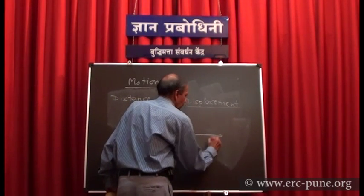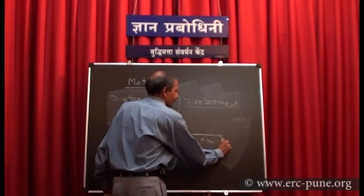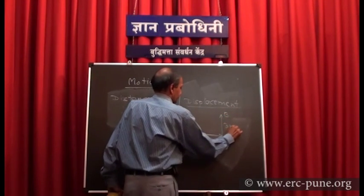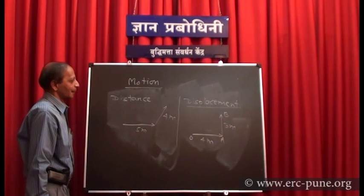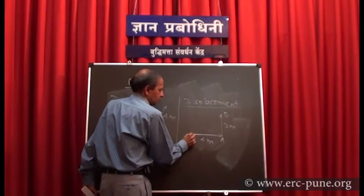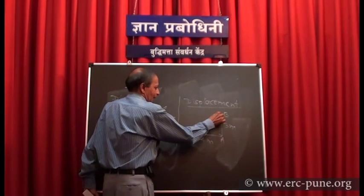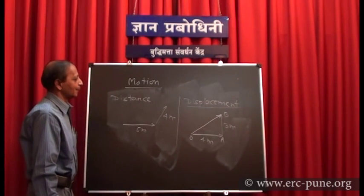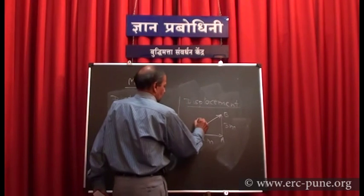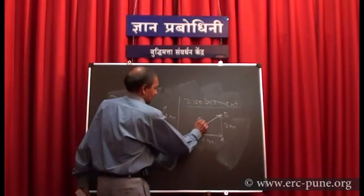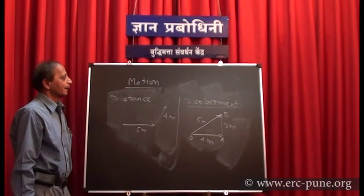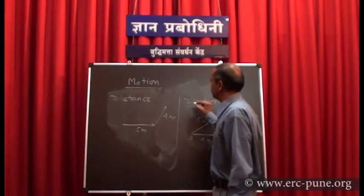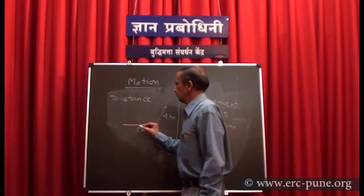For example, if I move 4 meters from O to A and 3 meters from A to B, perpendicular to each other, then the displacement is the shortest distance from the initial position O to the final position B, indicated by an arrow. OB by the Pythagoras formula comes out to be 5 meters. So displacement is a vector quantity while distance is a scalar quantity.